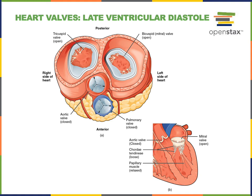The heart valves function to prevent backward flow of blood. Atrioventricular valves — AV valves — prevent blood from flowing backwards from the ventricles into the atria. Semilunar valves — SL valves — prevent blood from flowing backwards from the arteries into the ventricles. The AV valve on the right side of the heart is the tricuspid valve, which prevents blood from flowing backwards from the right ventricle into the right atrium. When the right ventricle contracts, it forces the tricuspid valve closed so that blood doesn't flow backwards.